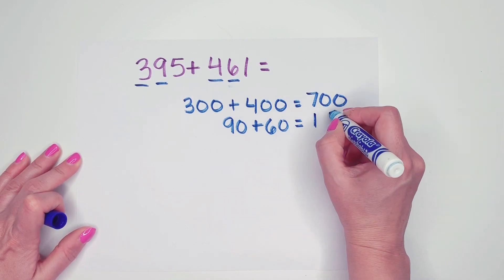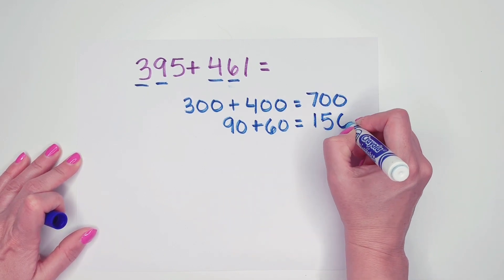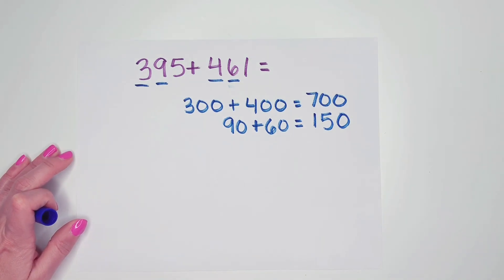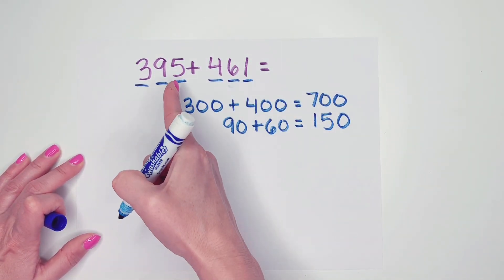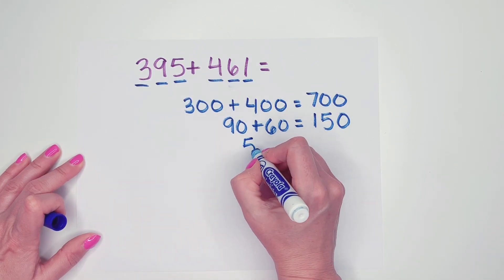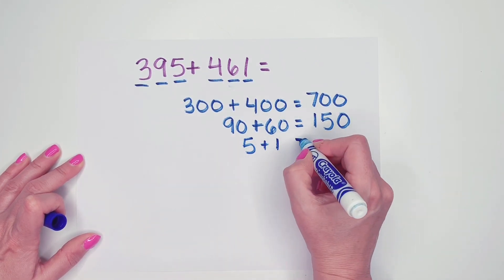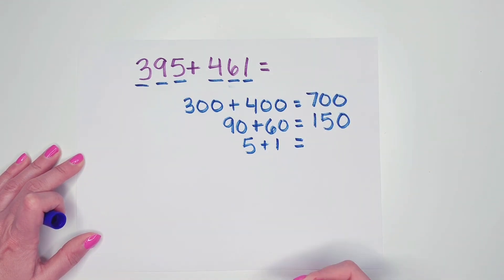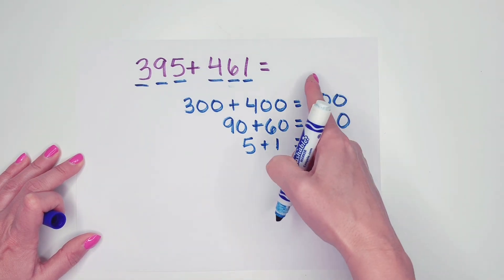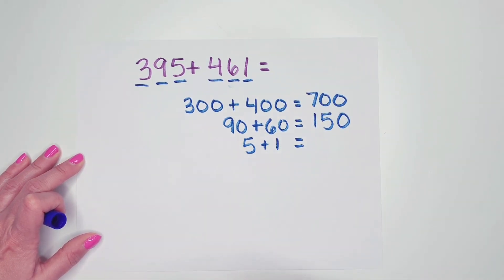Now watch carefully how I line up my answer. This will be important in the next step. Now let's look at our ones. We have a 5 and we have a 1. So 5 plus 1 equals, notice how all of my equal signs are lined up. It's okay that our addition signs aren't lined up because this is the part that's going to matter here. 5 plus 1 is 6.